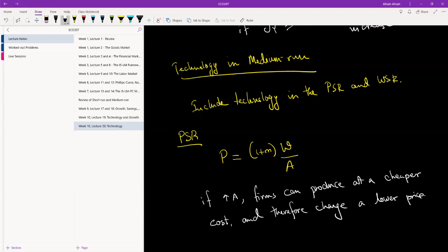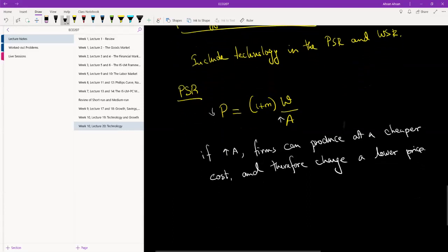So that should be obvious to everyone. That if A goes up, which is in the denominator, and nothing else changes, W doesn't change, M doesn't change, what's going to happen is P is going to go down. And the opposite is also true. If there is loss of technology for whatever reason, and A decreases, then production becomes more expensive. And as a result, price will go up. So this is how we introduce technology into the price setting relation.